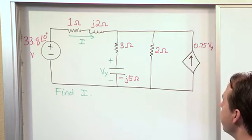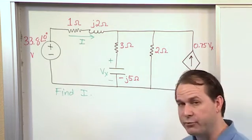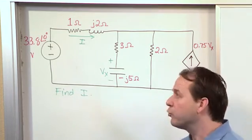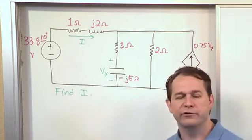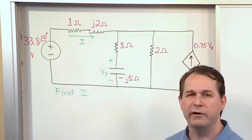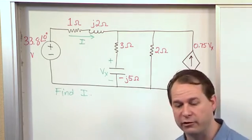These are all reference directions that would be given to you in your problem statement. So you see here that we have a problem. You could solve it with node voltage. There's no reason why you couldn't make this a node and this a node. Write your node voltage equation, solve it, and figure out the current, but we're getting practice with mesh current problems.